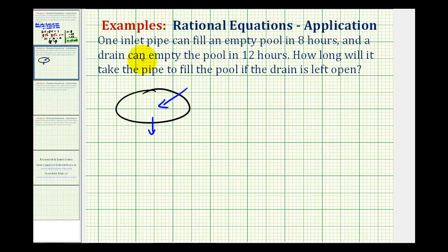Let's start by giving the rates of the inlet pipe and the drain. Well if the inlet pipe can fill the pool in eight hours, it would fill one eighth of the pool per hour. And if the drain can empty the pool in twelve hours, the drain rate is equal to one twelfth of the pool per hour.